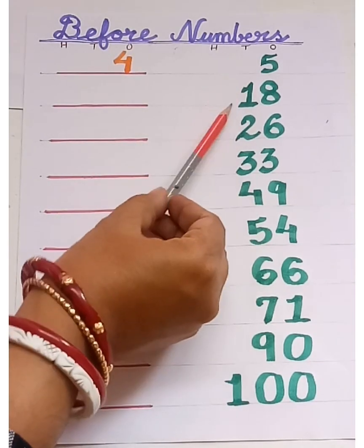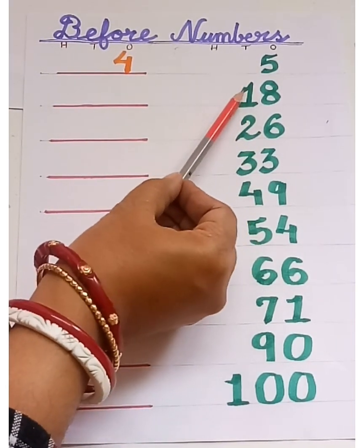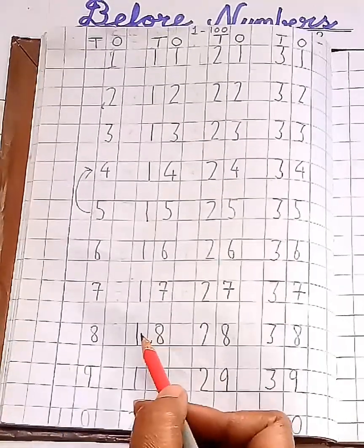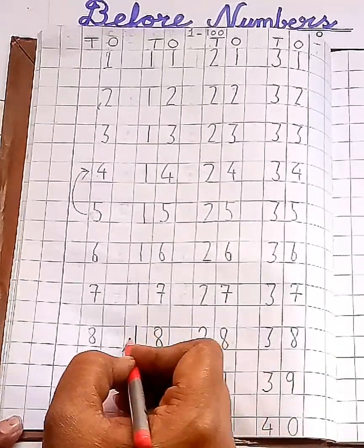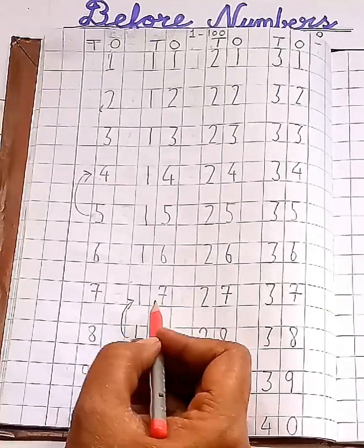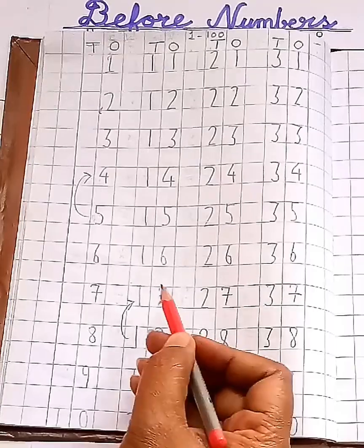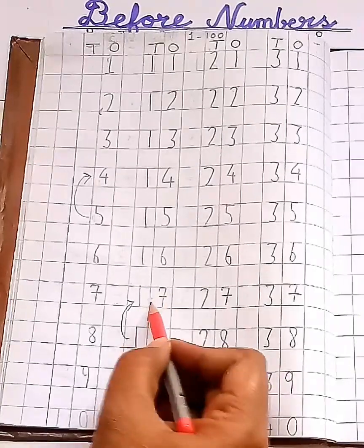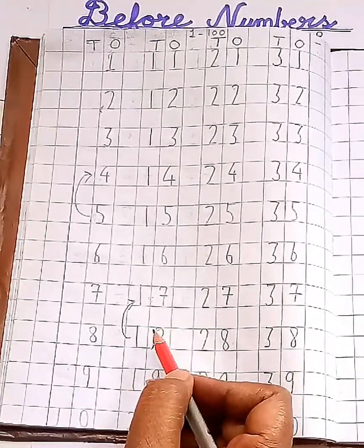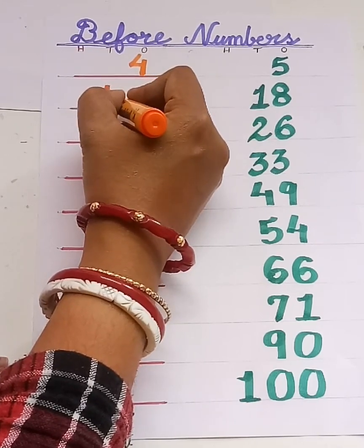Which number comes before eighteen? Let's count backward from eighteen. Eighteen and then seventeen. Yes, seventeen comes before eighteen. Let's write seventeen.